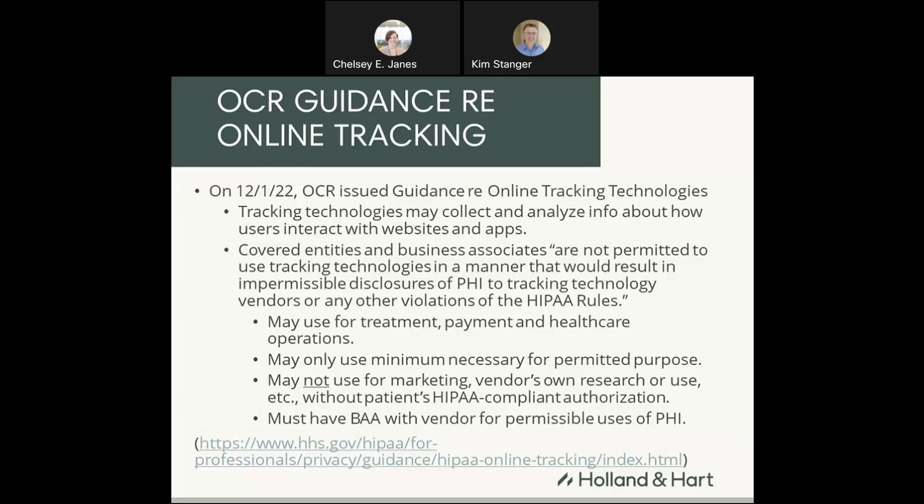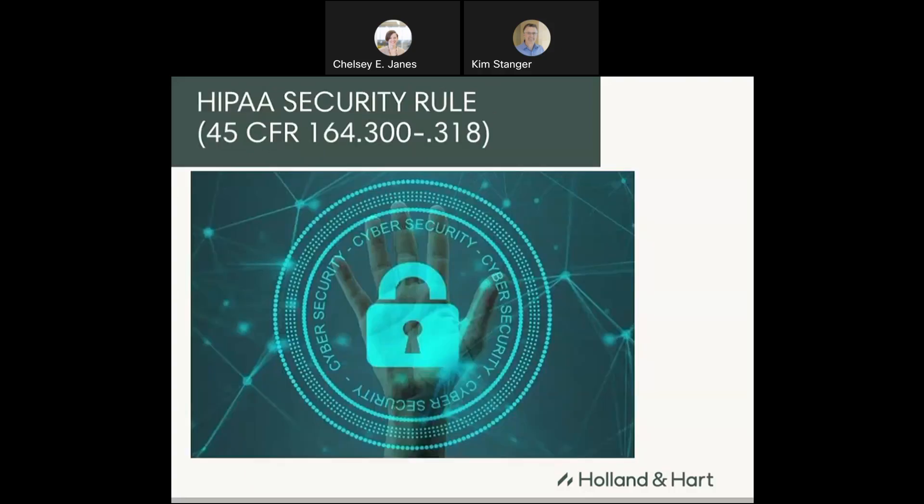In December of 2022, the OCR issued guidance concerning tracking technology — a big deal. They said that if you're engaging vendors who use cookies or other pixels to track people accessing your information, that may violate HIPAA. You need to make sure that any tracking technology used by you or your vendors is compliant with HIPAA — that it's being used for treatment, payment, or healthcare operations and not for improper purposes like marketing without the patient's authorization. You'd also want to make sure your business associates aren't using information you've given them to engage in tracking that is not permitted by HIPAA. If you haven't looked at this guidance, this is something you need to consider.